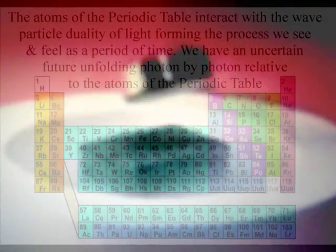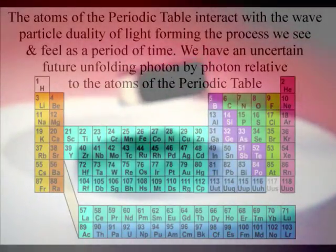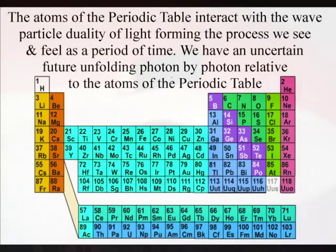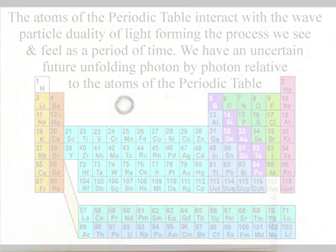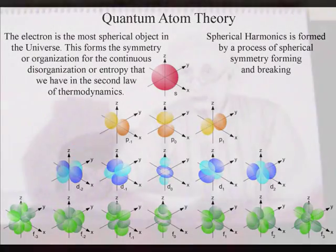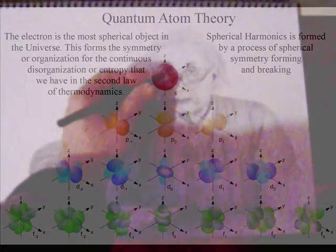We have a phase change at the temperature of everyday life, with the process being relative to the atoms of the periodic table, with the wave-particle duality of light and matter in the form of electrons forming a blank canvas that we can interact with, forming the possible into the actual.